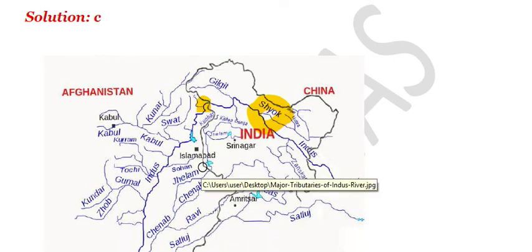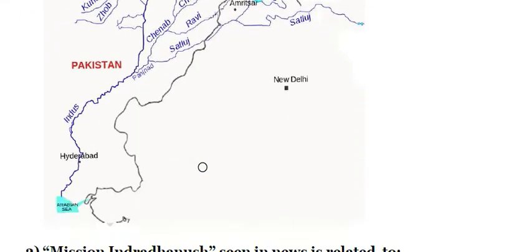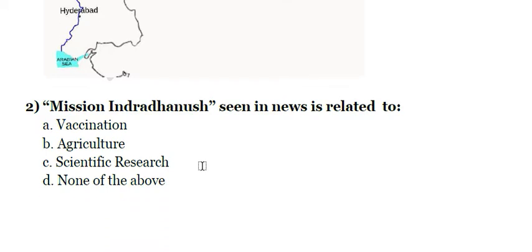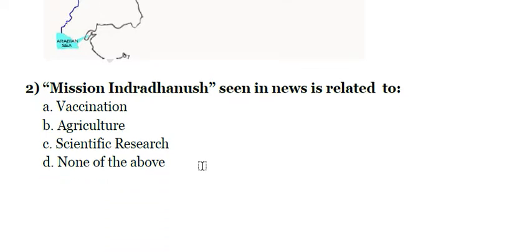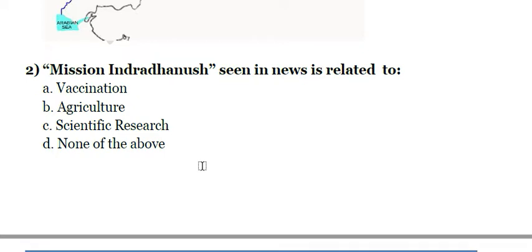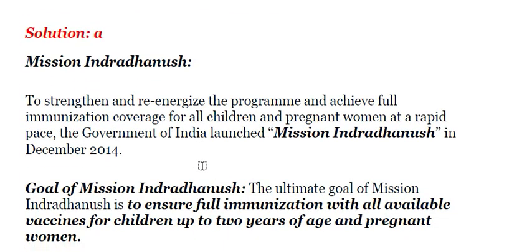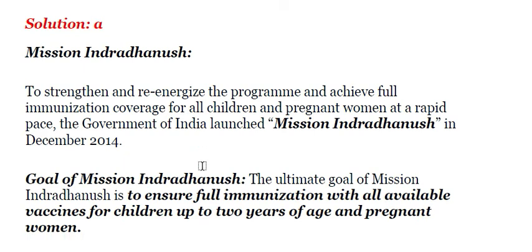The second question is: Mission Indra Dhanush, seen in news, is related to A. Vaccinations, B. Agriculture, C. Scientific Research, D. None of the above. The answer is A, Vaccinations. Mission Indra Dhanush is basically aimed at strengthening and re-energizing the program to achieve full immunization coverage for all children and pregnant women at a rapid pace.